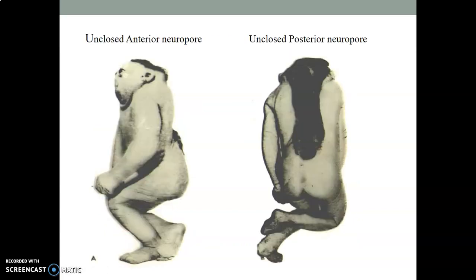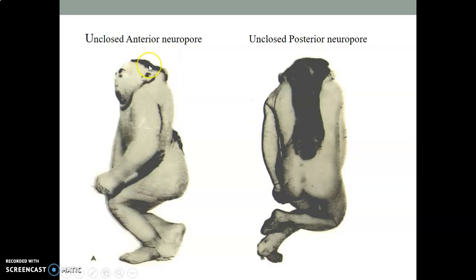Anencephaly is a condition where there is defective or lack of closure of the cranial neural pole. This means the brain will not form, because you need the cranial portion of the neural tube to close in order to form the brain. When the content does not form, the container will not form either — so the scalp in these babies does not form. Anencephaly is not compatible with life, so these babies die as soon as they are born.